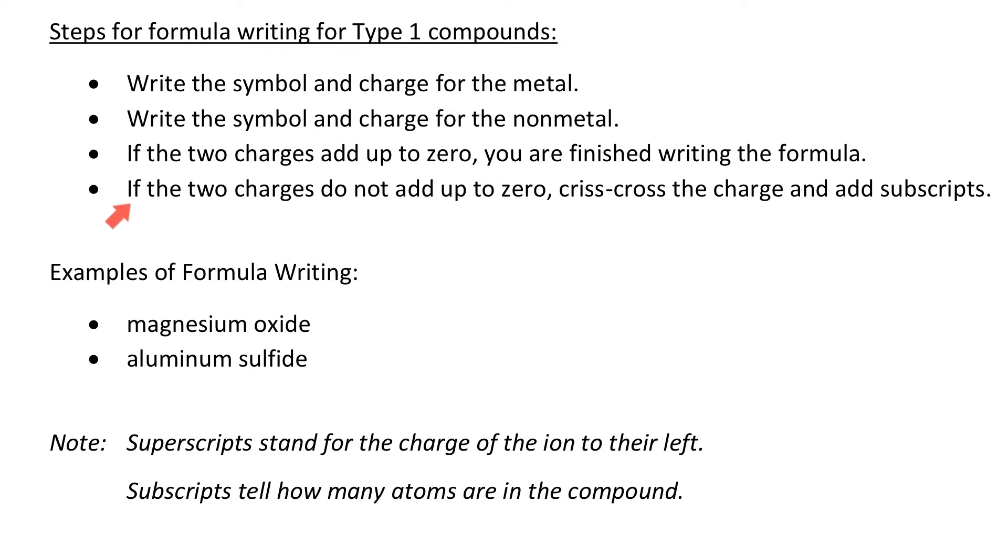And if the two charges do not add up to zero, then we do what we call the crisscross method. You crisscross the charges and add the subscripts. That's what I'm going to show you in the second example down below.